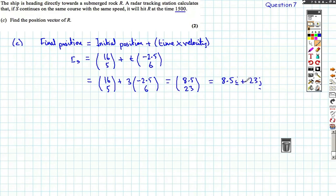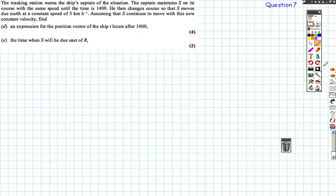If you're not confident with the column vectors, you can just convert back. It is 8.5i plus 23j. Okay, so that's the final position vector if it travels for three hours. Therefore, this is where the rock will be. Now, we obviously don't want the ship to crash, so luckily there's a tracking station, and they warn the captain what's happening, and the captain then does what he's doing for two hours until two o'clock, and then he changes course, or he changes velocity.